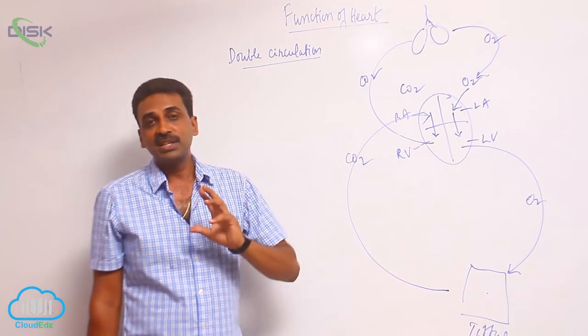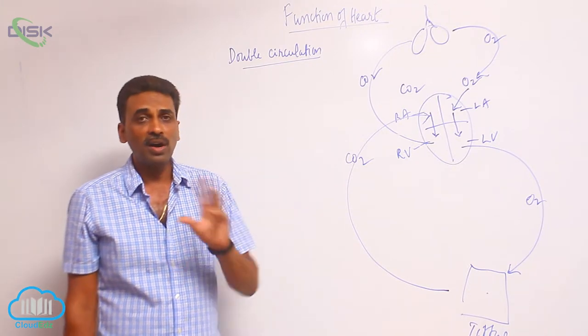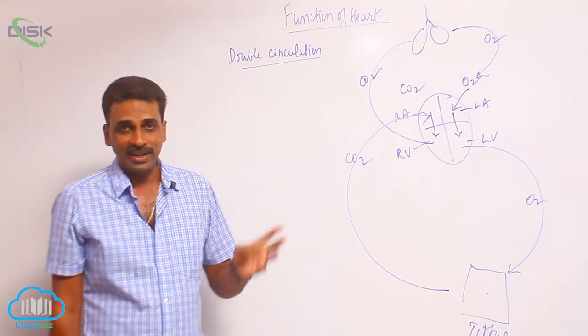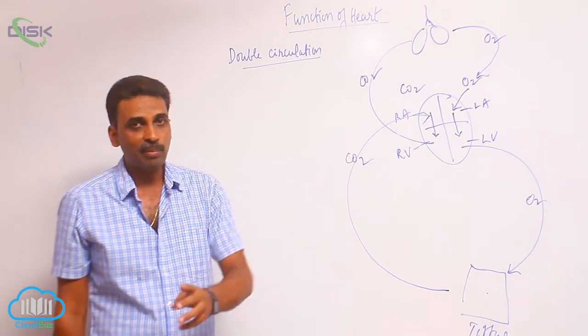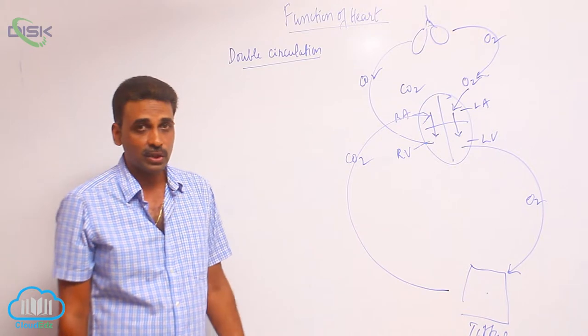Double circulation is seen in all hearts which are four-chambered. It is seen in crocodiles, birds, and mammalian hearts.